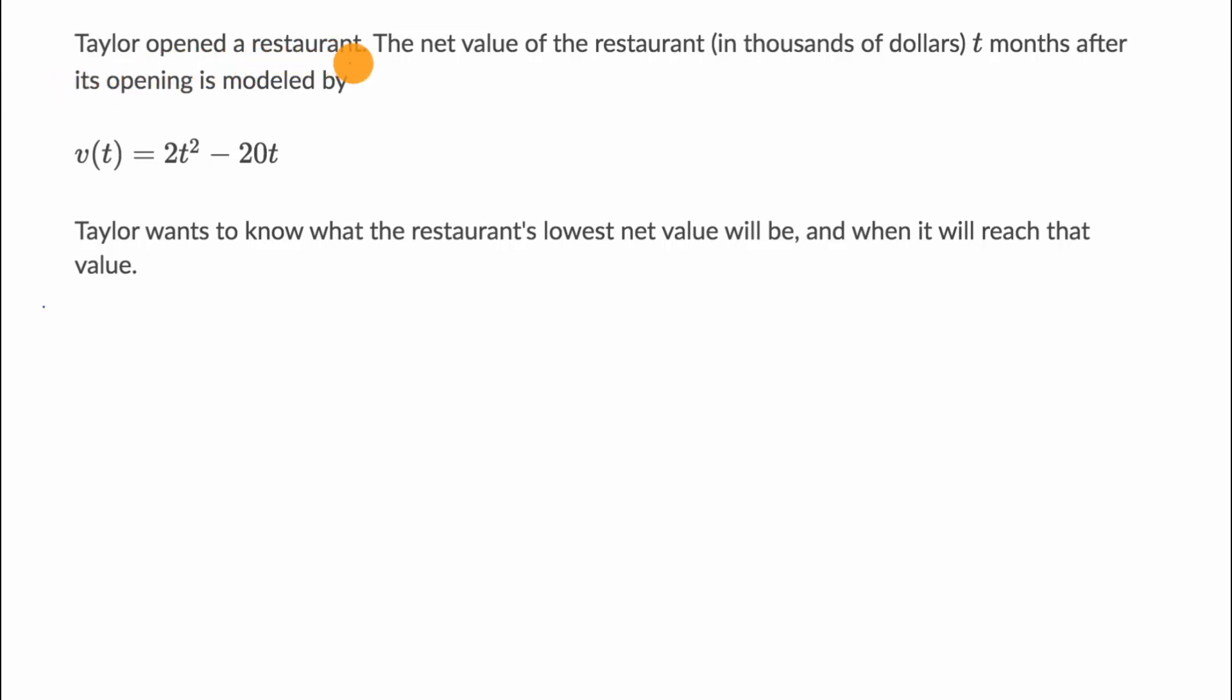We're told that Taylor opened a restaurant. The net value of the restaurant in thousands of dollars, t months after its opening, is modeled by V(t) = 2t² - 20t. Taylor wants to know what the restaurant's lowest net value will be and when it will reach that value.